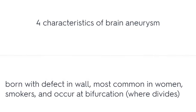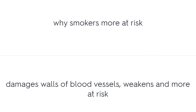Four characteristics of brain aneurysm: born with a defect in the wall, most common in women, associated with smokers, and occur at bifurcation points. Smoking damages the walls of blood vessels, weakening them and putting them more at risk.